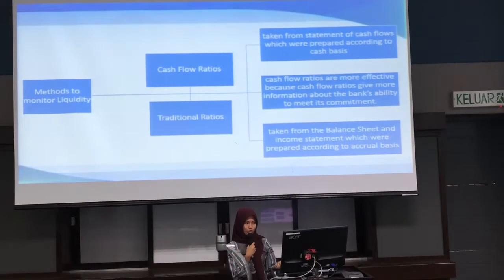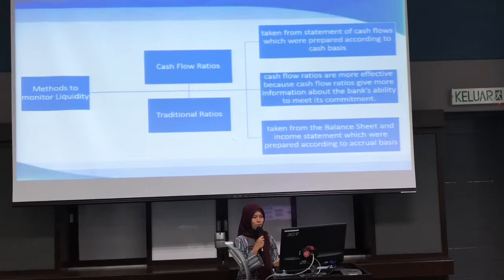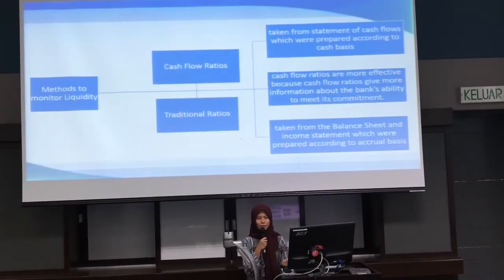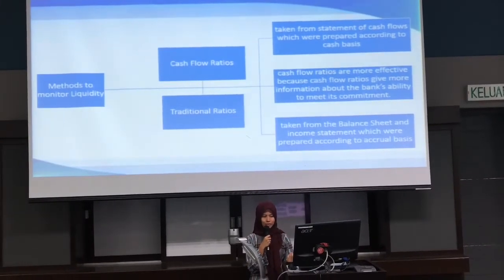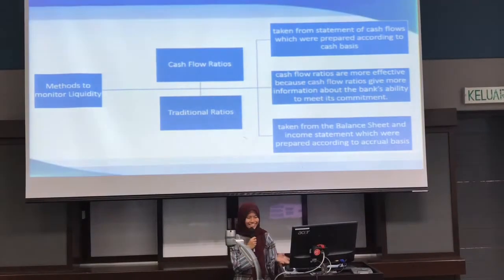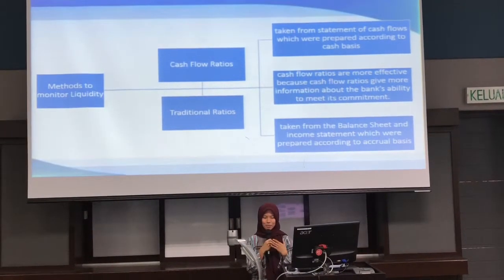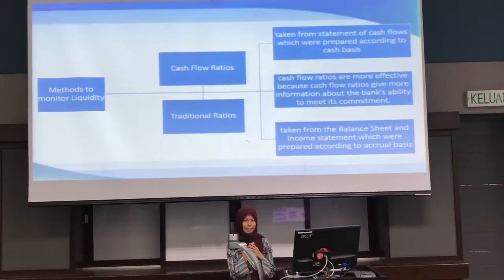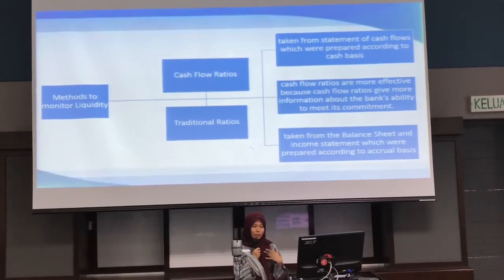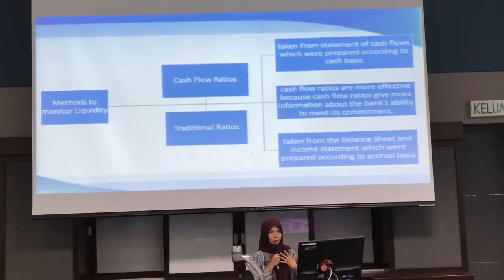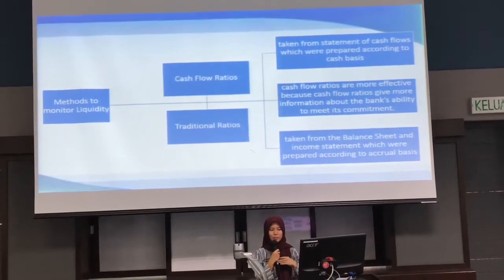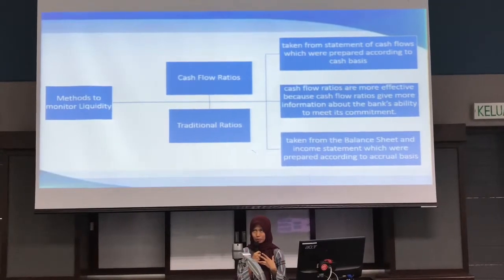Two methods to monitor liquidity are cash flow ratios and traditional ratios. A cash flow ratio is taken from the statement of cash flows, which is prepared according to the cash basis. A traditional ratio is taken from the balance sheet and income statement, which are prepared according to the accrual basis. Cash flow ratios are more effective to monitor liquidity because they give more information about the bank's ability to meet its commitments.